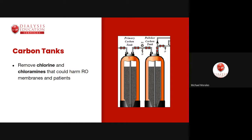Two carbon tanks must be installed in series with an empty bed contact time of at least 10 minutes — meaning the water must take at least 10 minutes from entering the first tank to exiting the second. The tanks contain granular activated carbon (GAC), an extremely porous burned organic material. One teaspoon of GAC can have the surface area of a football field, giving it enormous capacity to adsorb chlorine and chloramine.